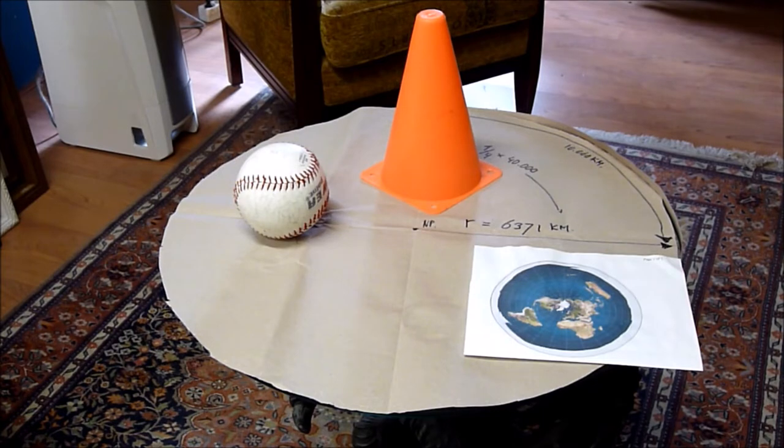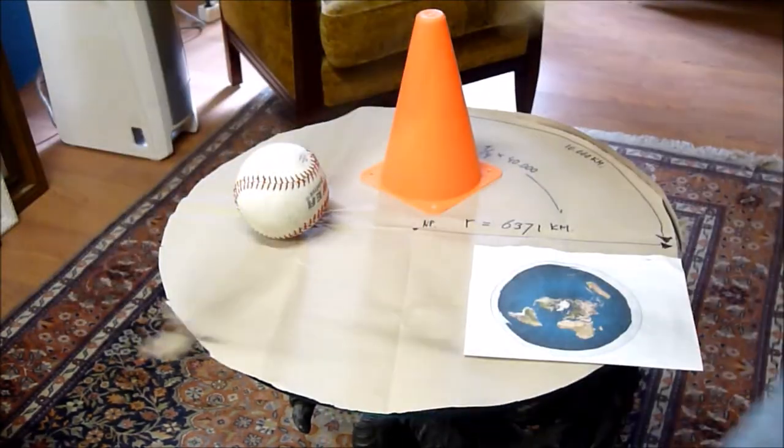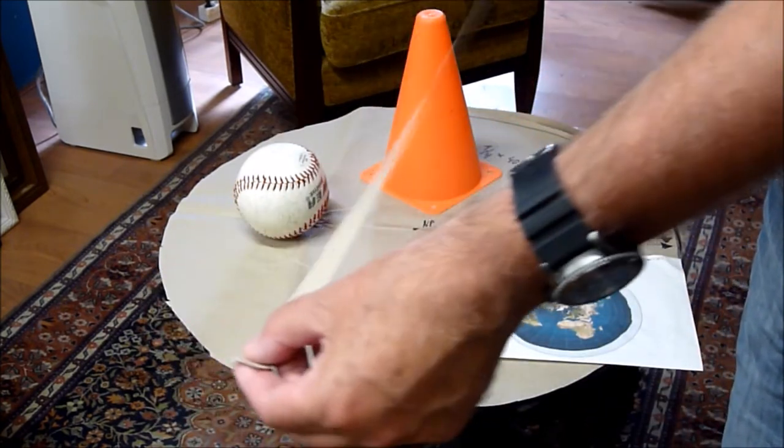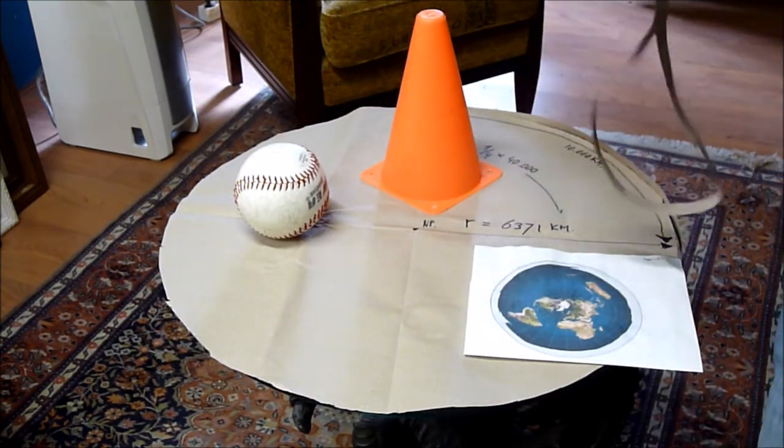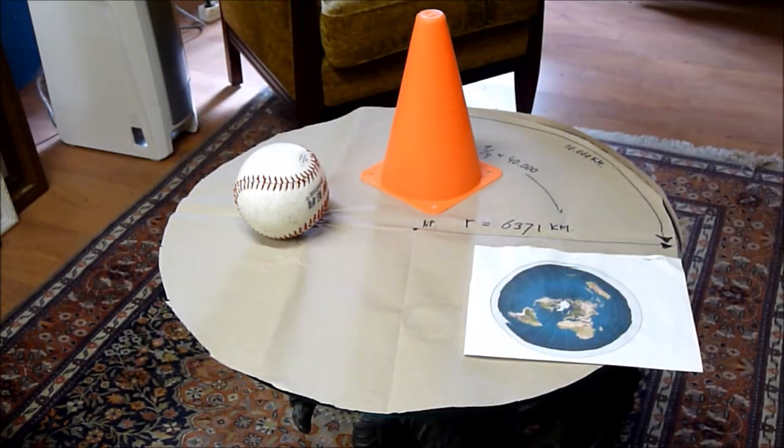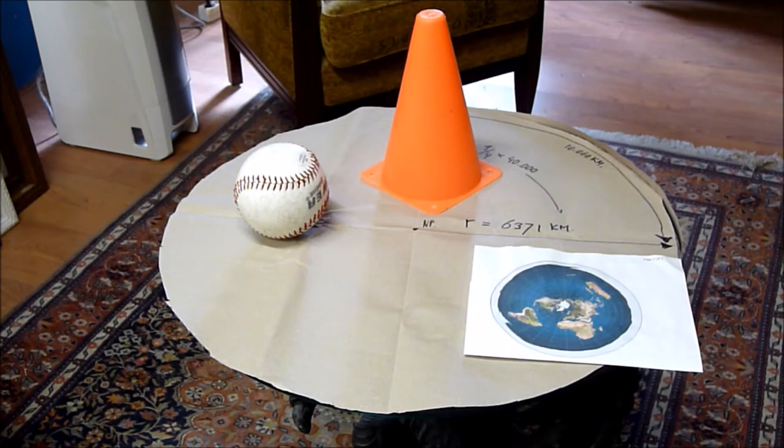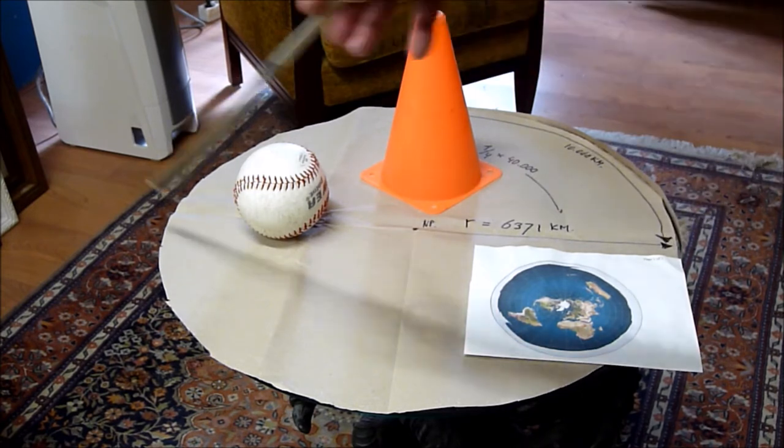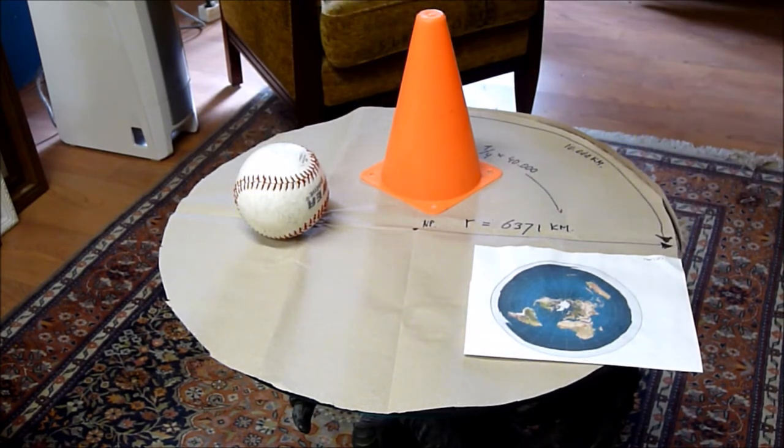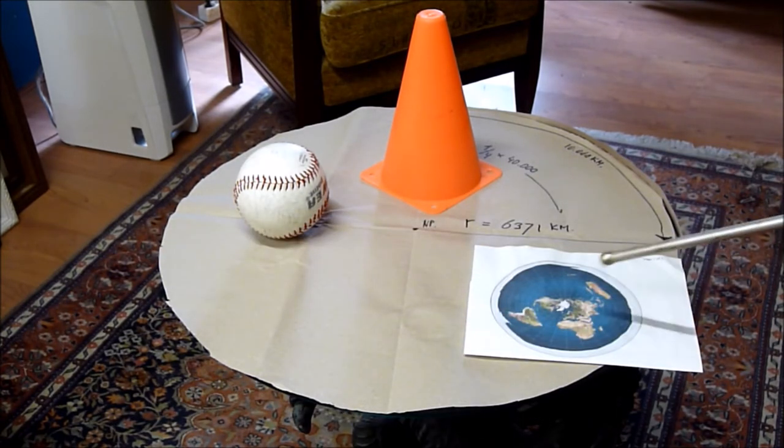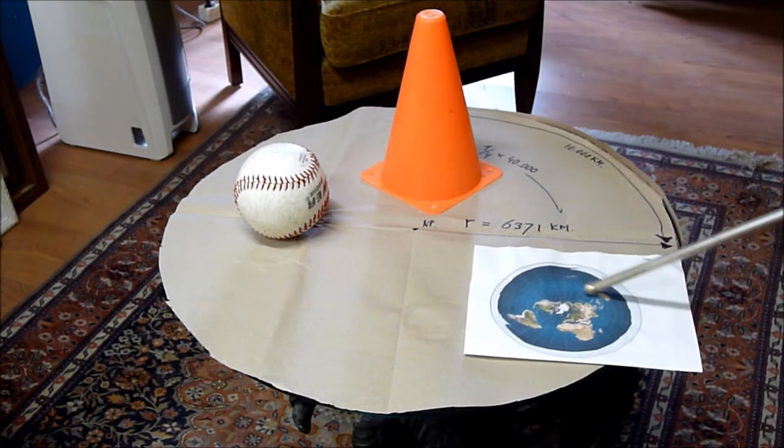En dat is mooi, want dat kunnen we testen. Je pakt het touwtje, je maakt dat bijvoorbeeld 1 meter lang, steek het ergens in de grond. Op het uiteinde van het touwtje hou je een potlood en dan maak je eventjes een cirkel. En vervolgens ga je met een ander touwtje om die hele cirkel heen. En dan zul je zien dat die buitenste cirkel 3,14 keer de diameter is van die cirkel die je tekent. Oftewel, 2 keer de straal.